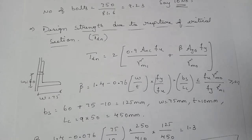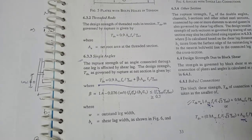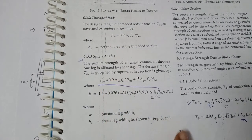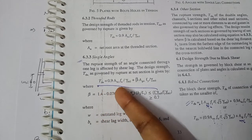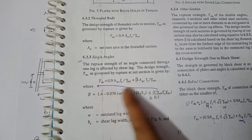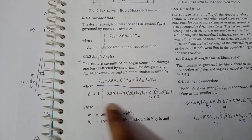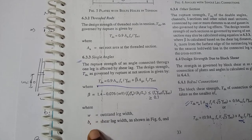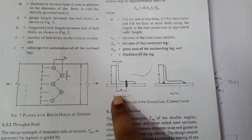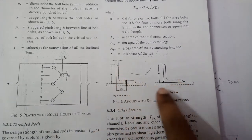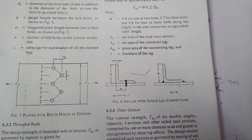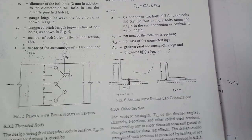Next, we find the design strength due to rupture of the critical section, Tdn. This is the second of the three checks. The equation is found in the code book on page 33, clause 6.3.3, for single angles: Tdn = 0.9×Anc×fu/γm1 + β×Ago×fy/γm0. The unknown here is β, which has its own equation. The diagram in the code defines w, w1, and bs, where bs relates to the outstanding leg and the thickness of the gusset plate.